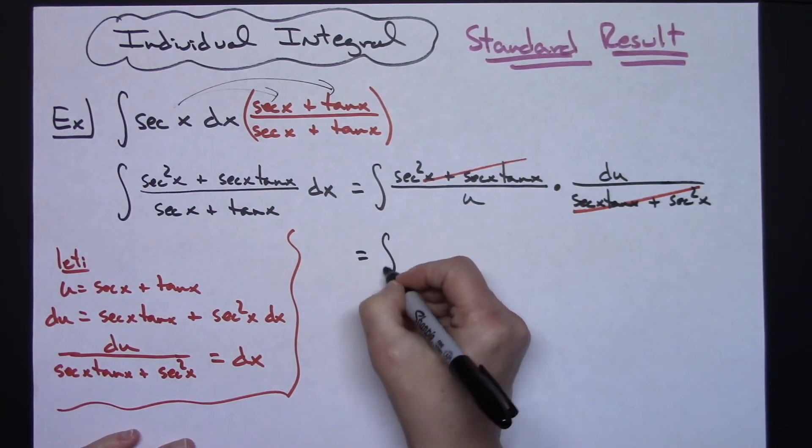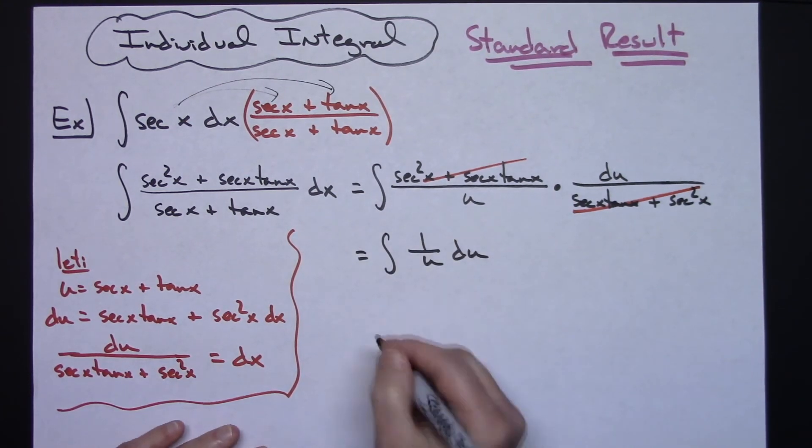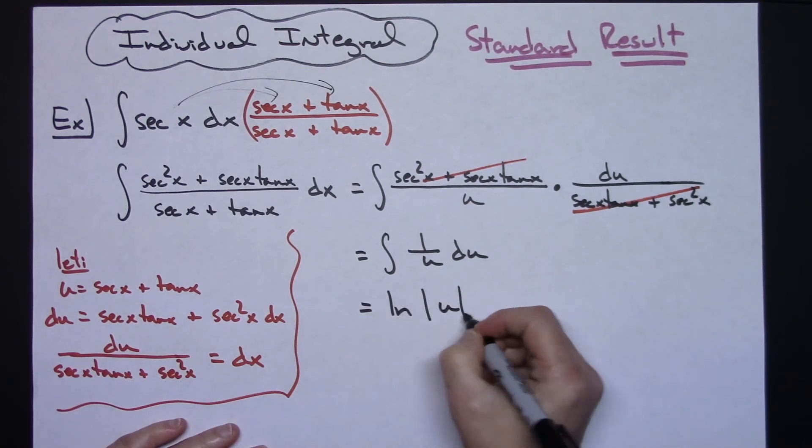leaving us with the integral of one over u du, which is something that we can integrate really simply into just natural log absolute value of u plus c.